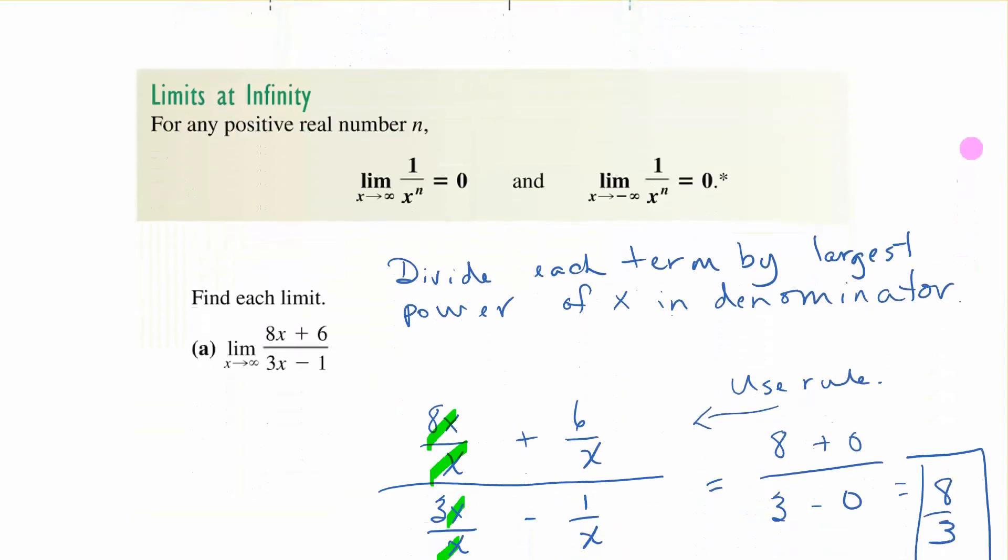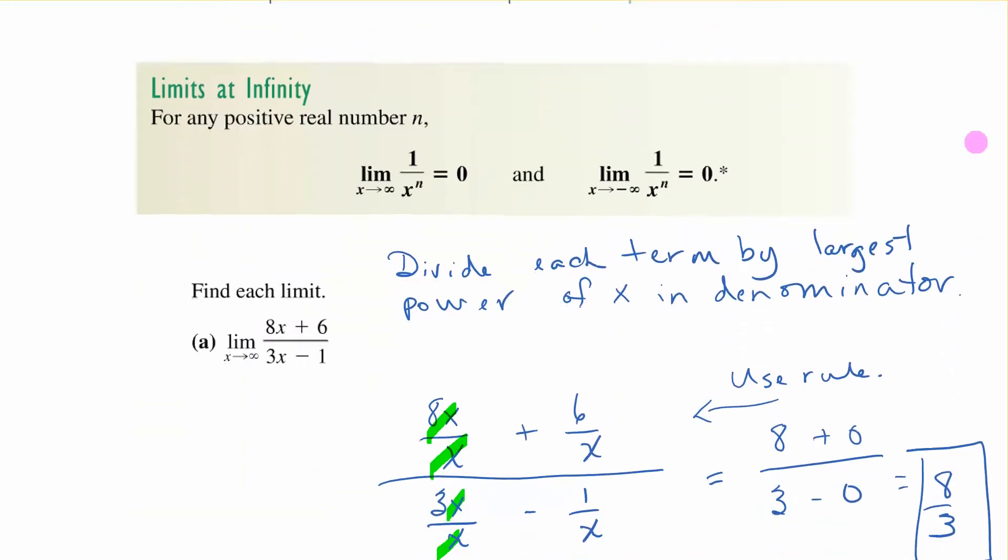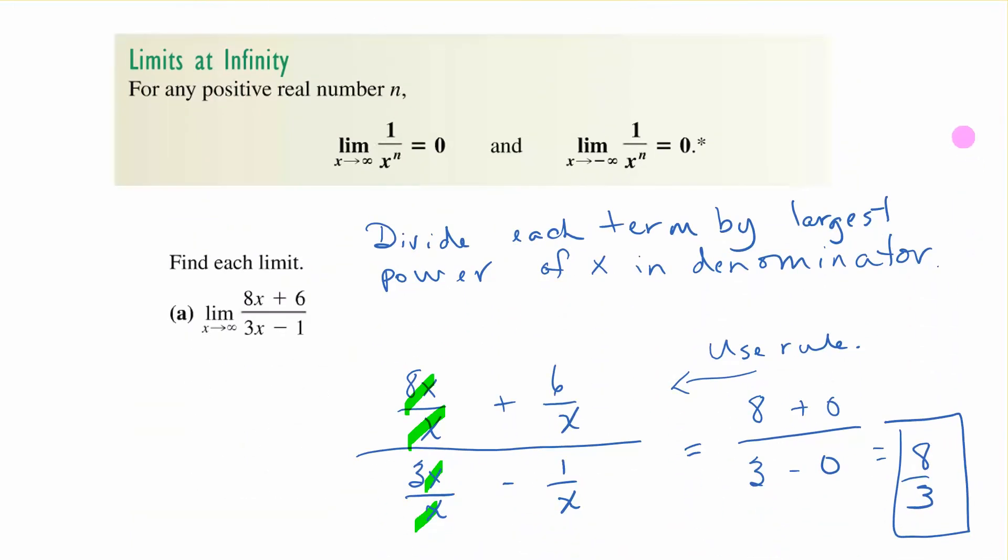Your limit will be either a y value or positive infinity, negative infinity or does not exist. And then if we're approaching infinity the limit there's two rules and it's for negative and positive infinity. The limit as x approaches infinity of 1 over x to any power is equal to 0.